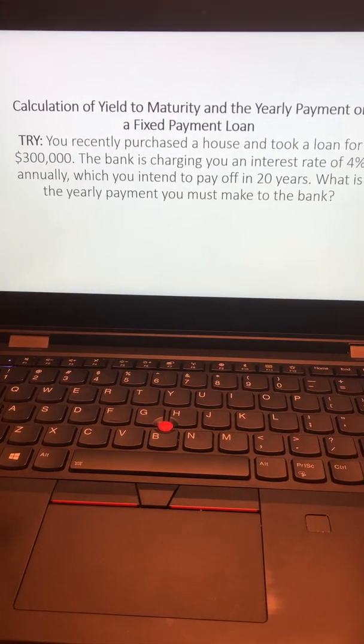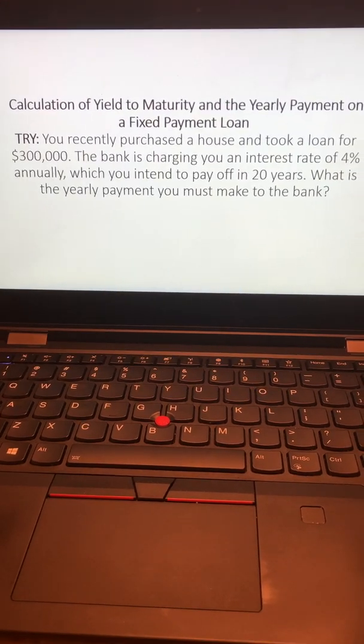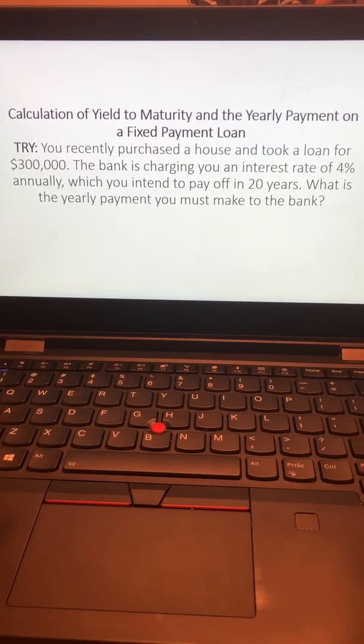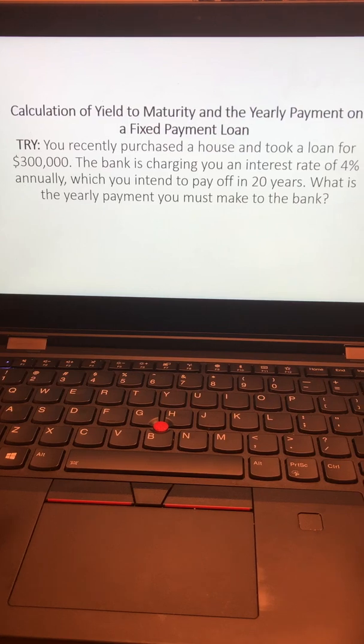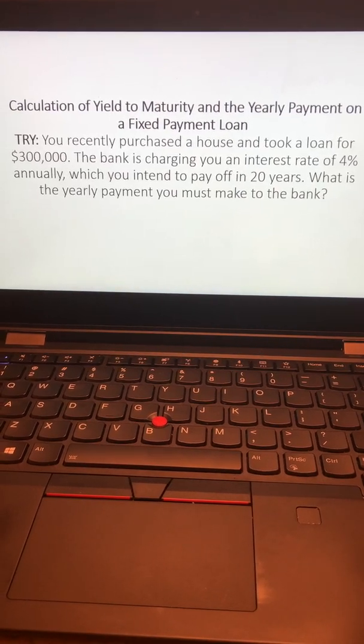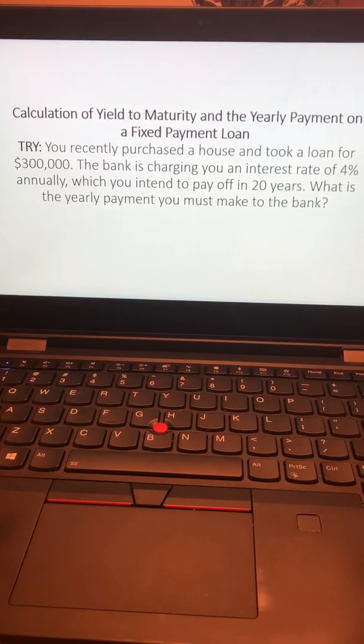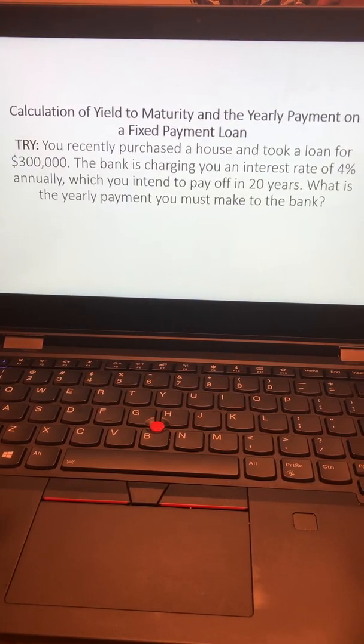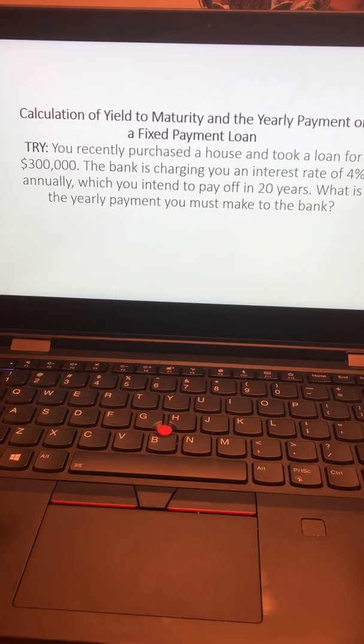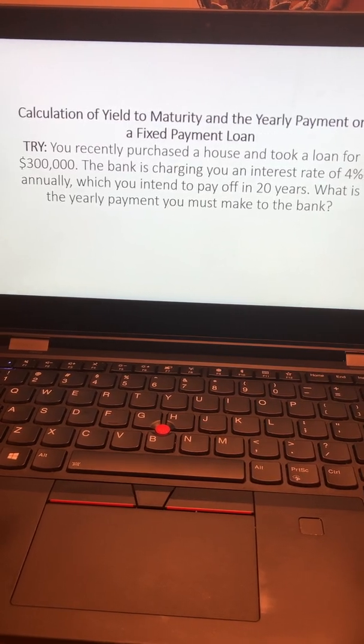So in this case, we have the present value of the loan, which is $300,000. We have an interest rate of 4% per annum, which is the annual interest rate. We also have a time period, N, which is 20 years, by which we intend to pay off the loan.